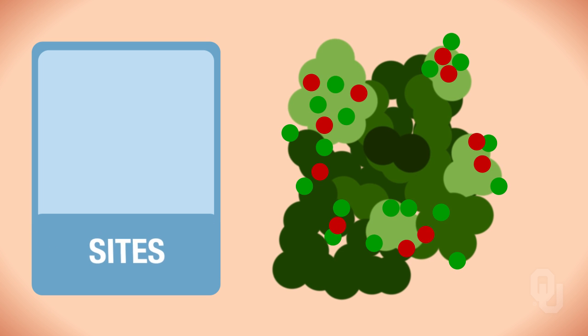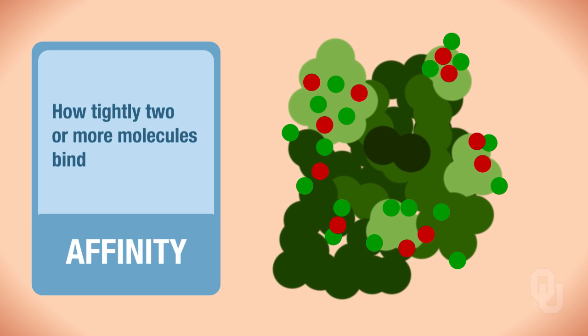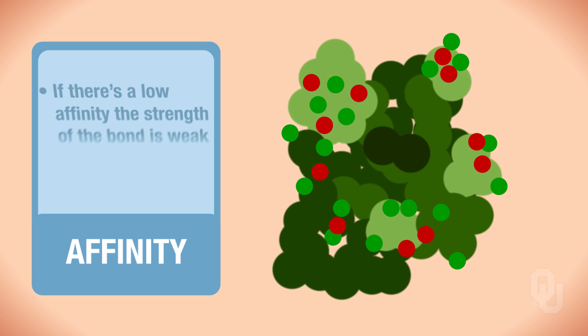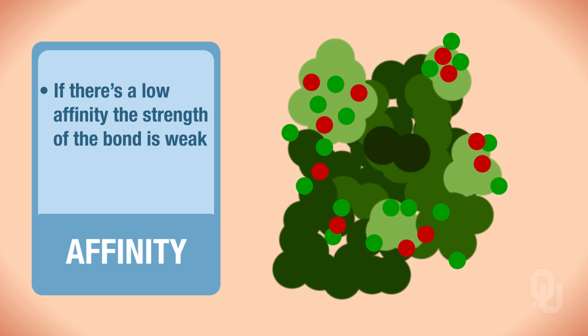So the sites contain two things, affinity and specificity. Affinity is a property that describes how tightly the molecules bind. How tightly two or more molecules bind. If there's a low affinity, the strength of the bond is weak. So if there's a weak bond, what do you think the duration of the bond would be? Short or long? How long would these two things stay connected?